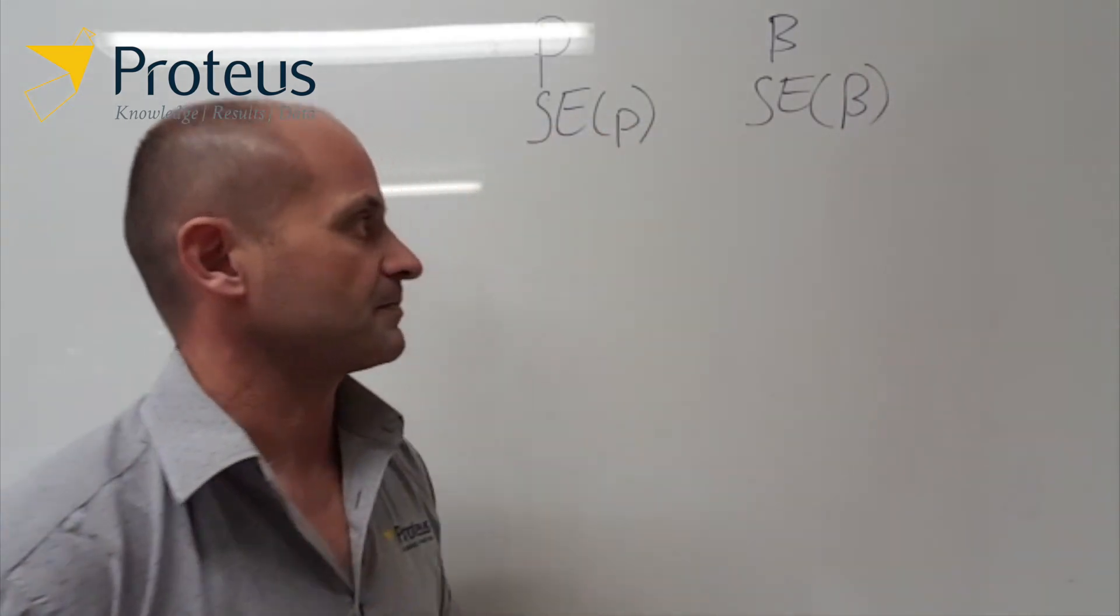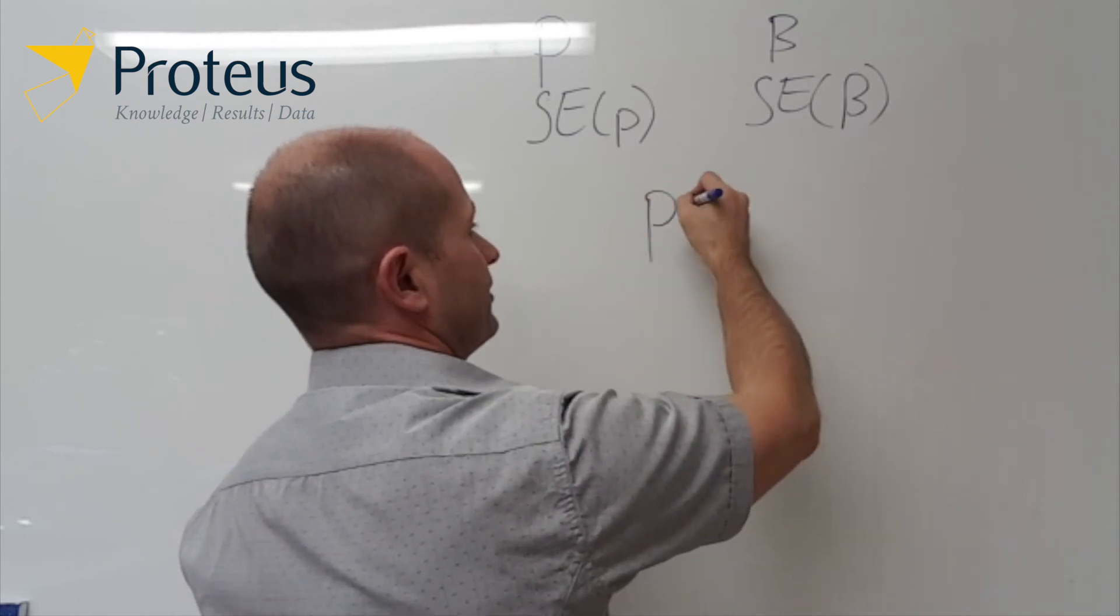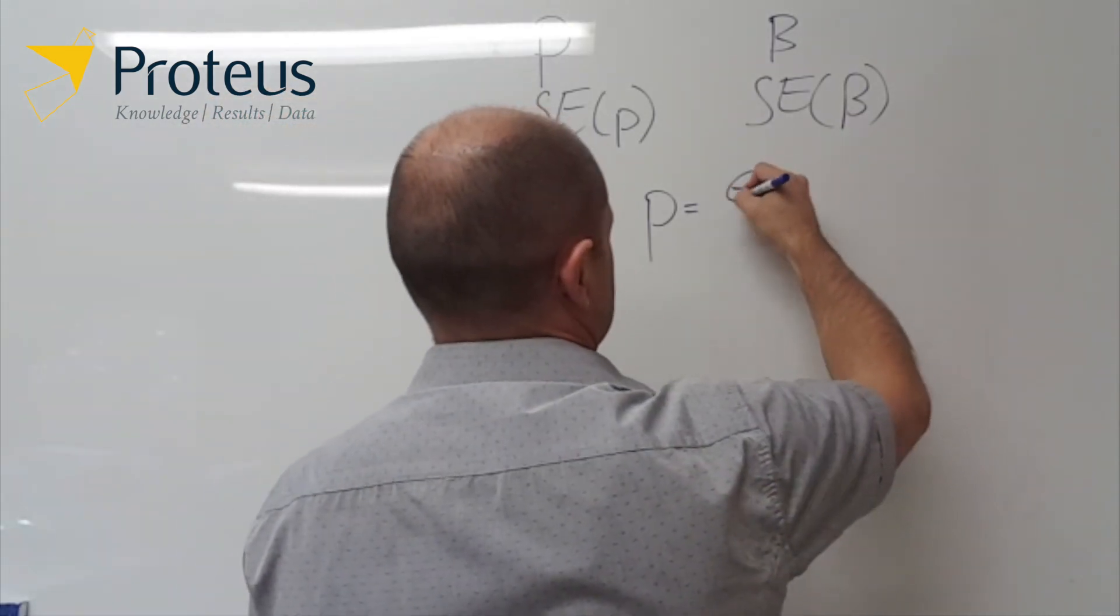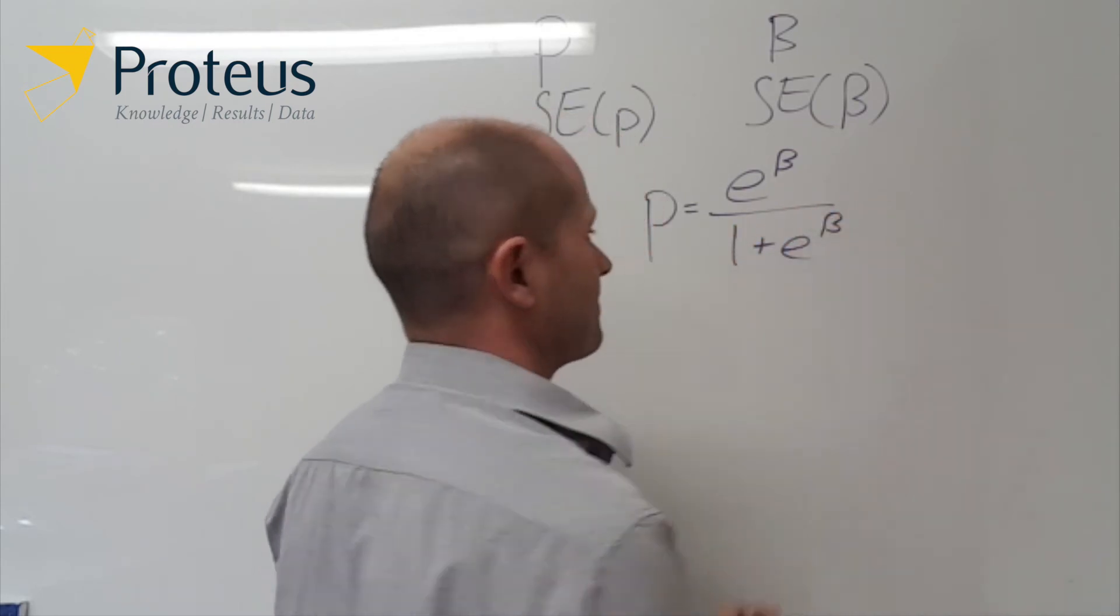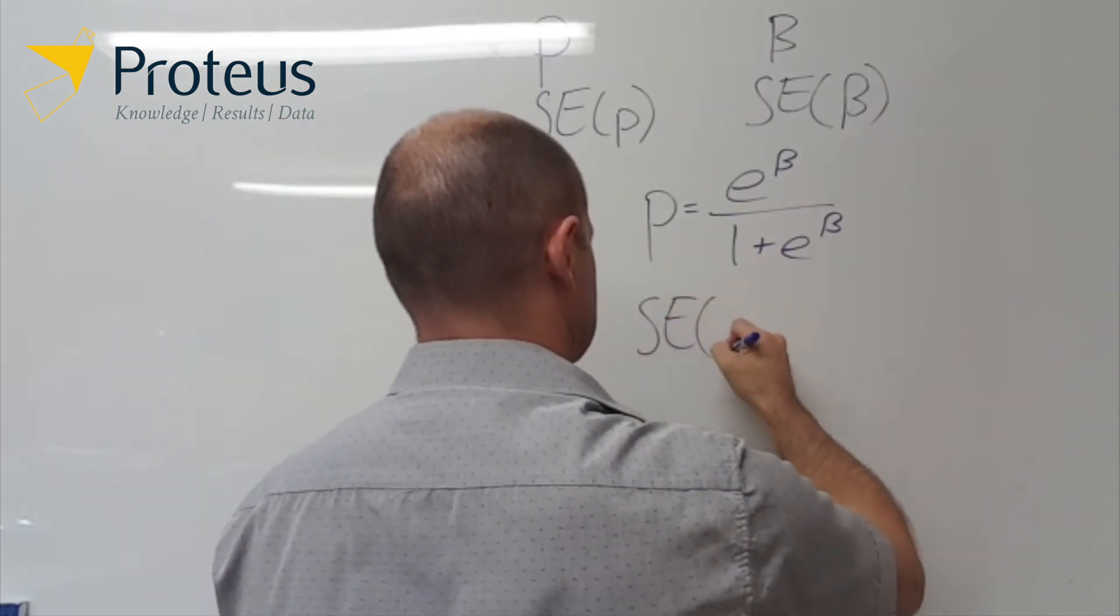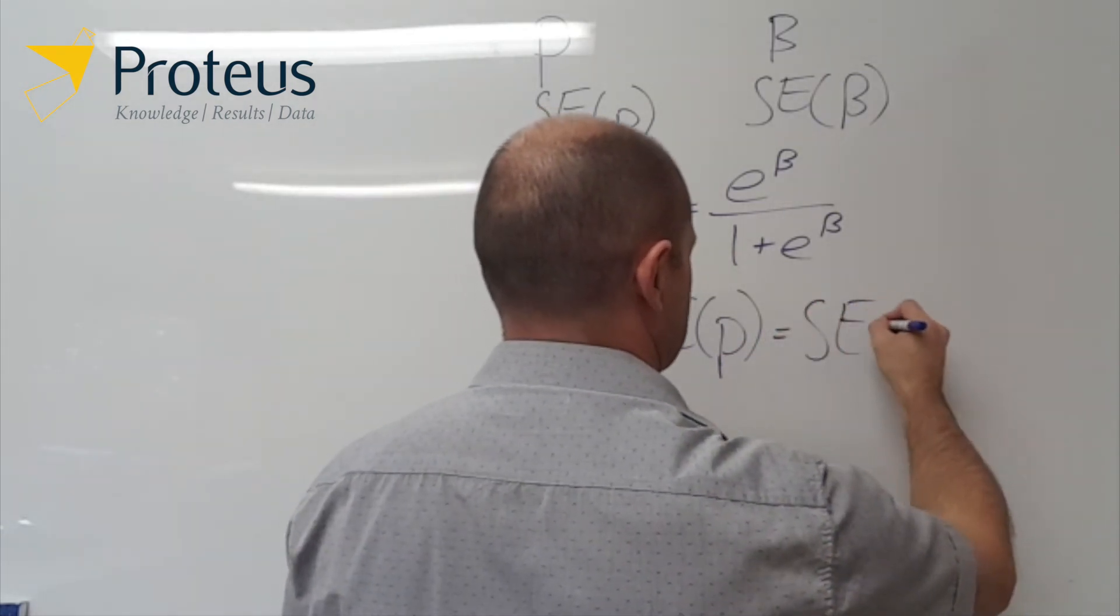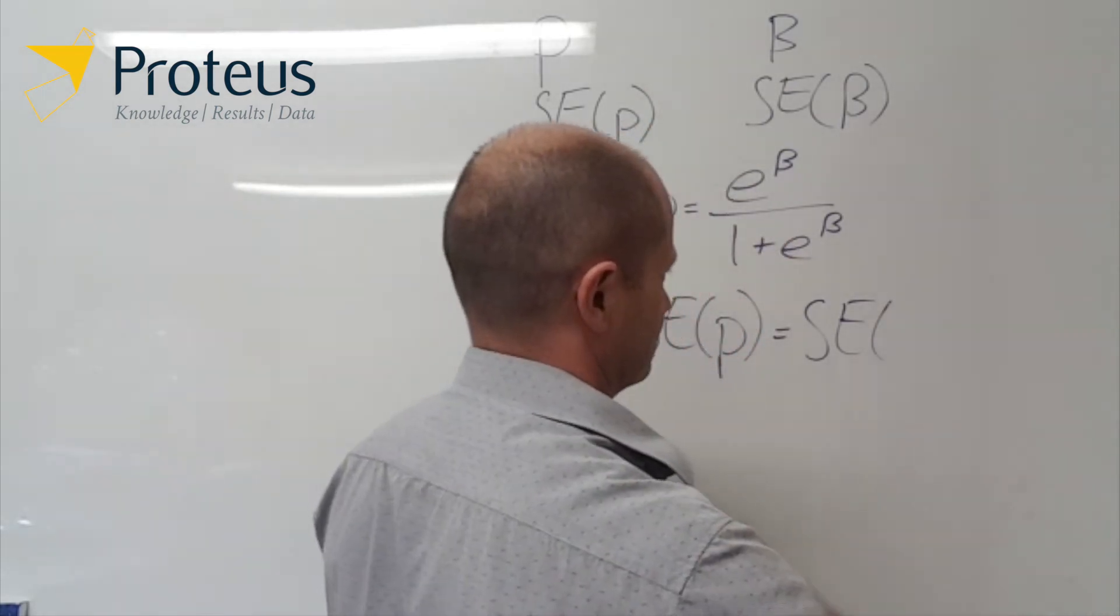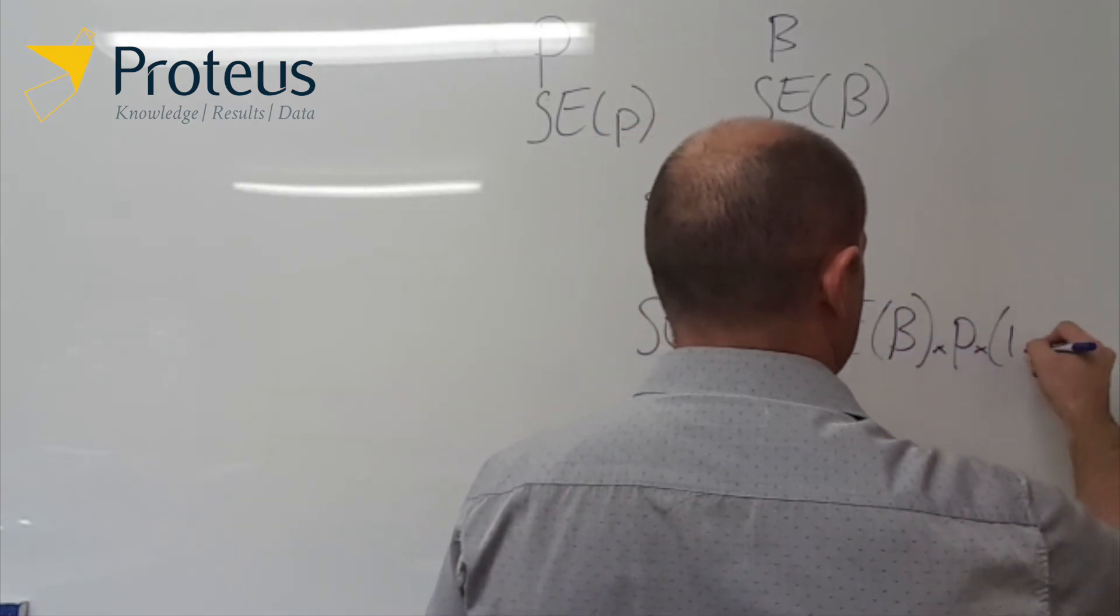Then to get our probability, so our probability will be equal to, if we just apply the reverse transformation, it's going to be e to the beta over 1 plus e to the beta, and then the standard error for p will just be the standard error that we have for beta times p times 1 minus p.